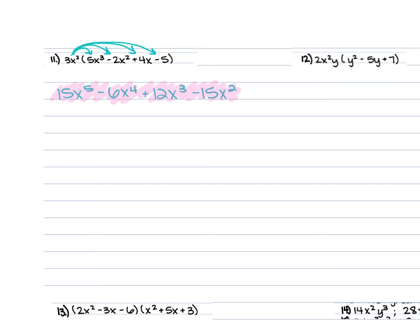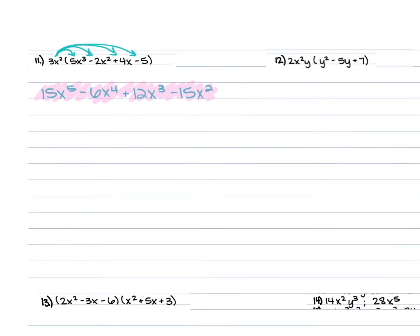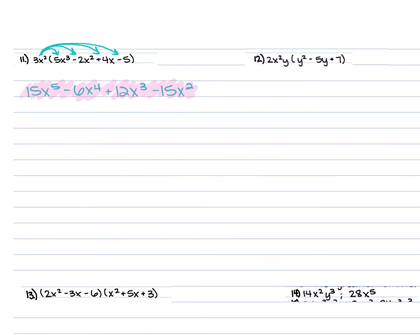For number 12, we have 2x²y times (y² − 5y + 7). Distribute the 2x²y: 2x²y times y² is 2x²y³, times negative 5y is negative 10x²y², and times 7 is 14x²y. No like terms, so that is your answer.